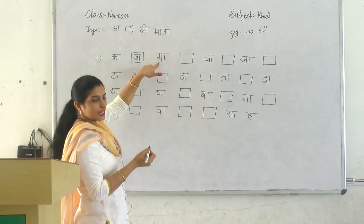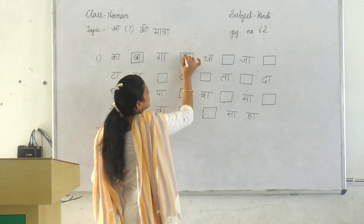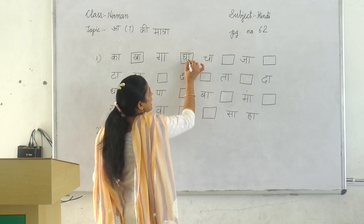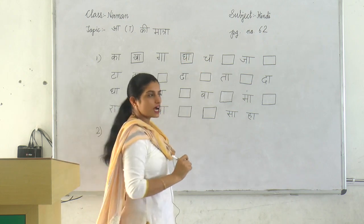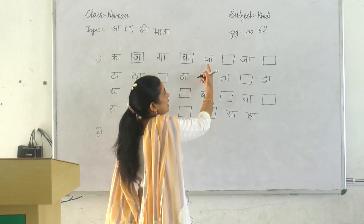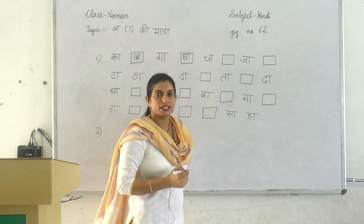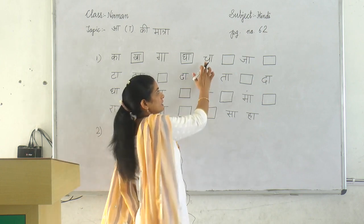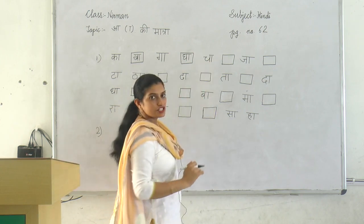Then gha a ga. Gha ke baad kya aega? Gha. Gha se ghar. Gha a ga. Gha sa ghas — we can make the word 'ghas' from gha. Adha is not there because adha kisi word ke starting mein nahi aata. So chha a cha.